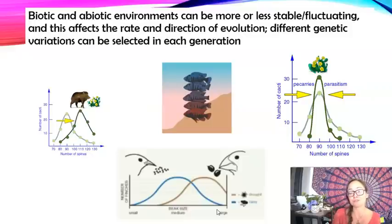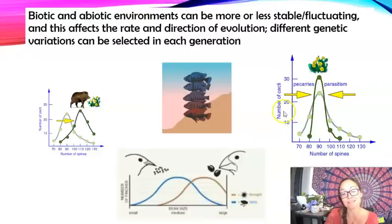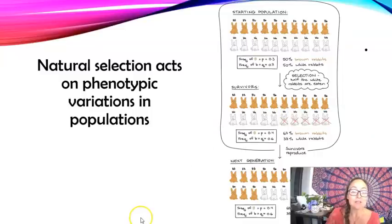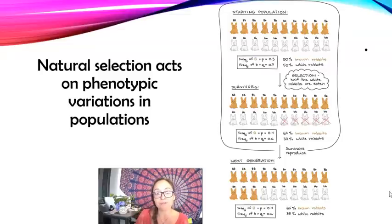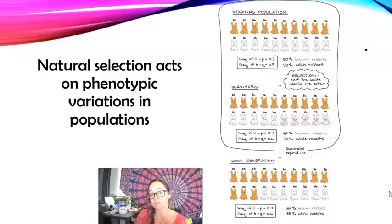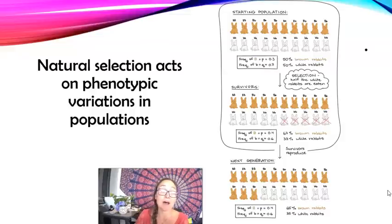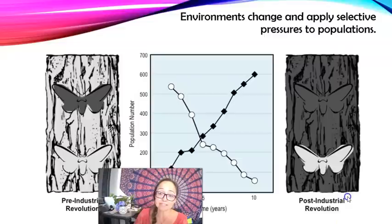Fitness can fluctuate depending on the environment — what is high fitness at one time may not be at another. It's important to point out that natural selection acts on phenotype. Looking at brown rabbits, you can't tell if they're homozygous dominant or heterozygous. It is the phenotype that gives them high or low fitness.